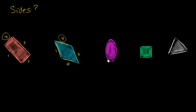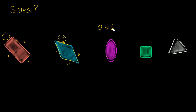What about this one? Well, this one is actually interesting. This one actually has no corners, and it has no sides. There's no straight edges over here — this thing is all curved. So since it has no corners, it also has no sides, or at least the way that I'm thinking about it. So I would say that this one over here has zero sides and zero corners.